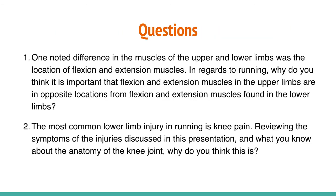Question 1: One noted difference in the muscles of the upper and lower limbs was the location of flexion and extension muscles. In regards to running, why do you think it is important that flexion and extension muscles of the upper limbs are in opposite locations from those found in the lower limbs? Question 2: The most common lower limb injury in running is knee pain. Reviewing the symptoms of the injuries discussed in this presentation and what you know about anatomy of the knee joints, why do you think this is?